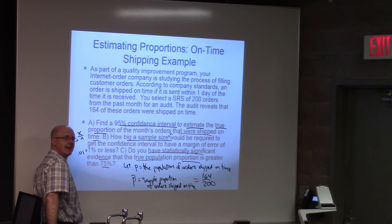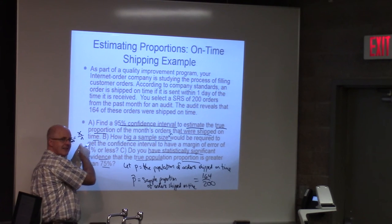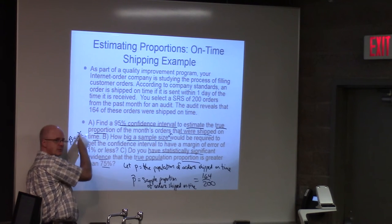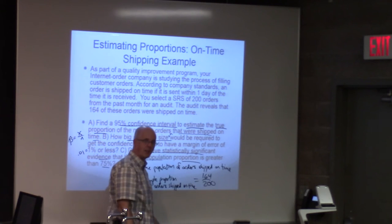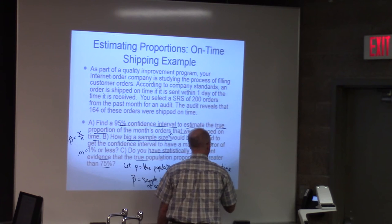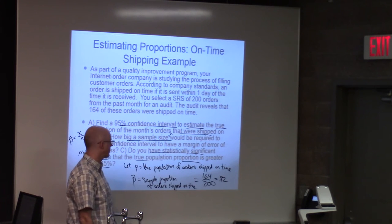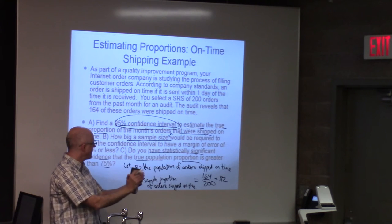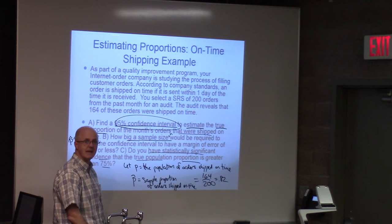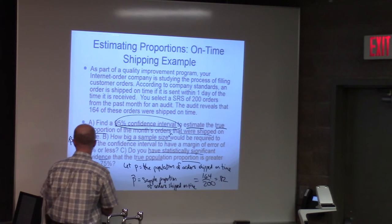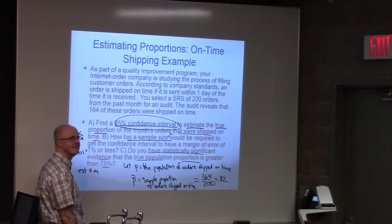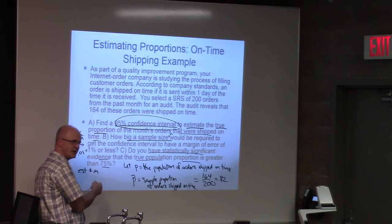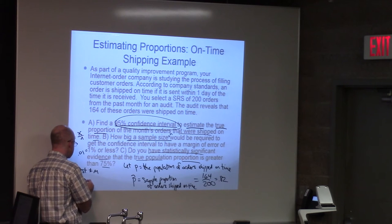164 out of 200, that's what that sample proportion equals. The book writes that as an abstract formula as X over N where N is the sample size, 200 in this case. X is the number that were shipped on time, the number of successes. As a decimal this is 0.82. That's your point estimate. But it's a point estimate, not an interval estimate. Now we want an interval estimate. We want to broaden this one point to an interval.